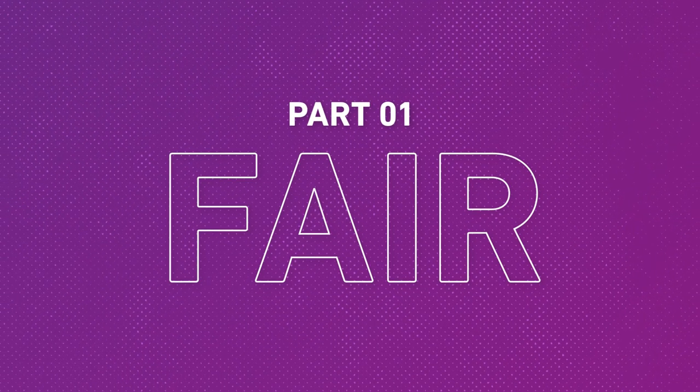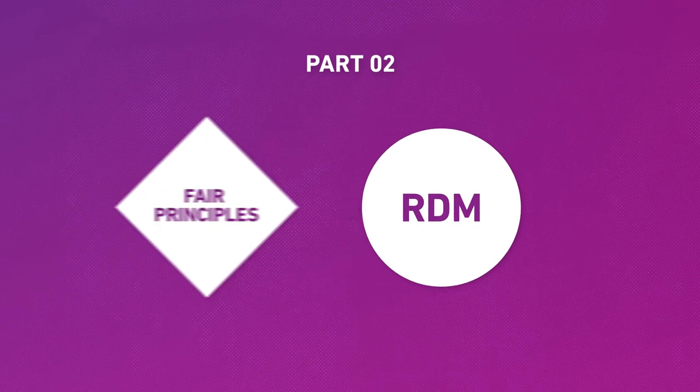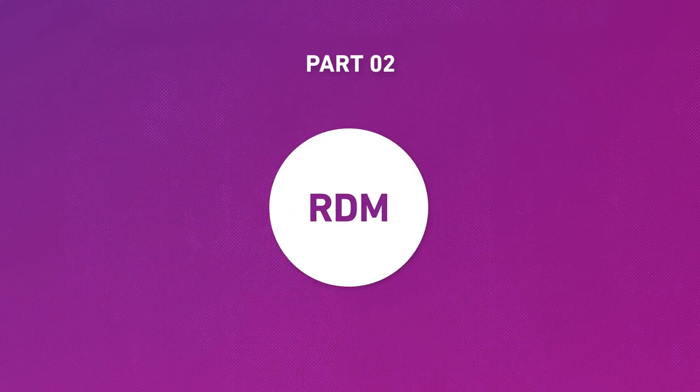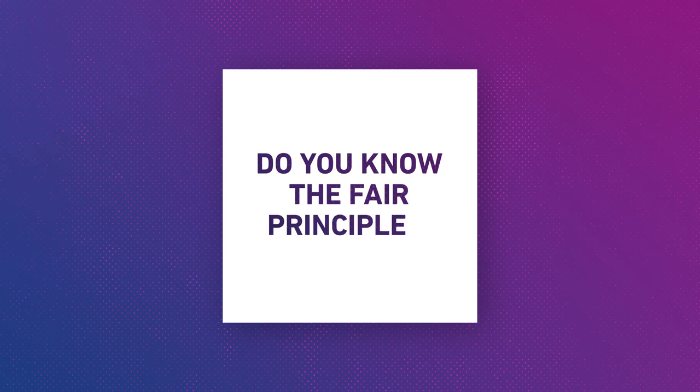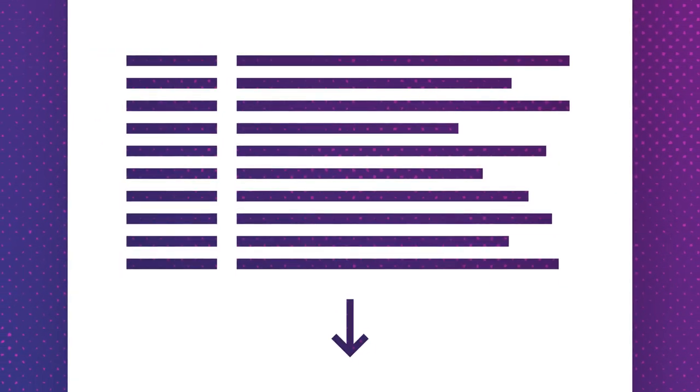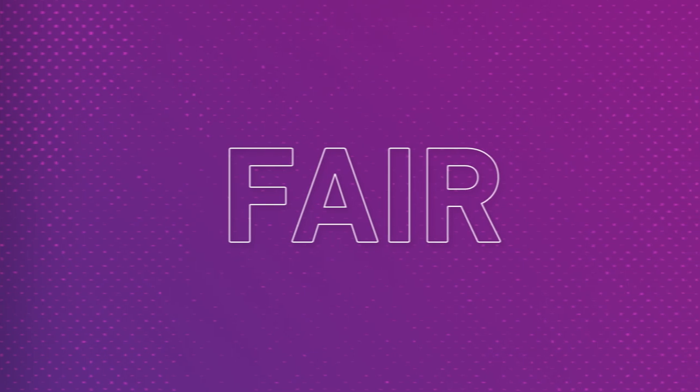In the first part of this video, you will learn what the four FAIR data principles are and what their benefits are. In the second part, you will learn how the ETH library can help you implement those principles in your research data management. If you already know the FAIR principles, you can skip the first chapter. There is a chapter list with corresponding timestamps in the video description.